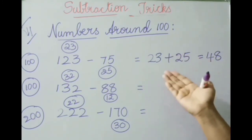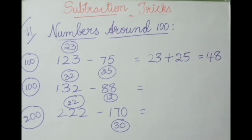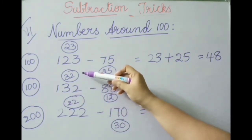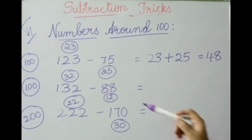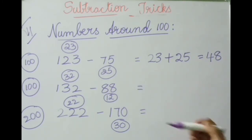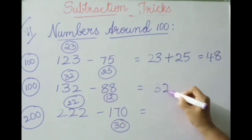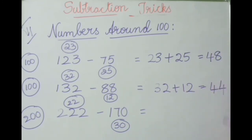See the next example: one hundred thirty-two minus eighty-eight. One hundred thirty-two is thirty-two above one hundred. Eighty-eight is twelve below one hundred. Add thirty-two and twelve: thirty plus ten is forty, two plus two is four. The answer is forty-four.